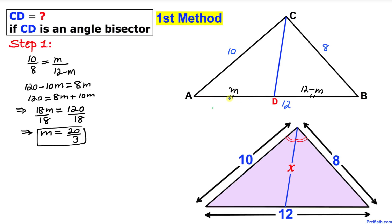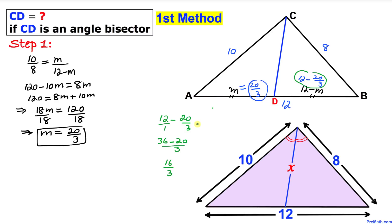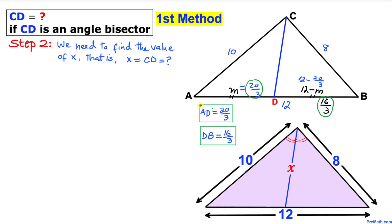So segment AD equals 20 over 3, and DB is simply 12 minus 20 over 3. Using cross multiplication to simplify that quantity, DB comes out to 16 over 3. So DB equals 16 divided by 3.